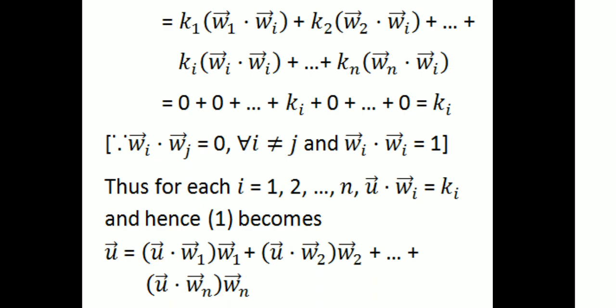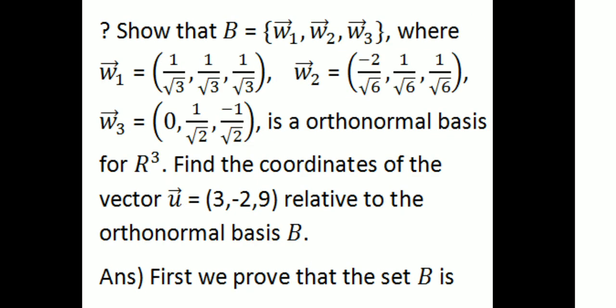For the example, B = {w1, w2, w3} where w1 = (1/√3, 1/√3, 1/√3), w2 = (-2/√6, 1/√6, 1/√6), and w3 = (0, 1/√2, -1/√2). This is given as an orthonormal basis for R³. Find the coordinates of the vector u = (3, -2, 9) relative to this orthonormal basis.